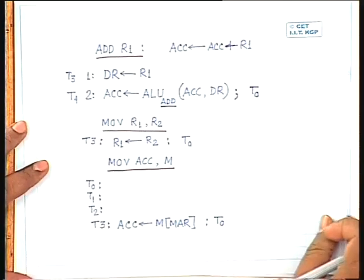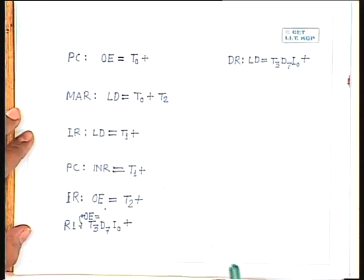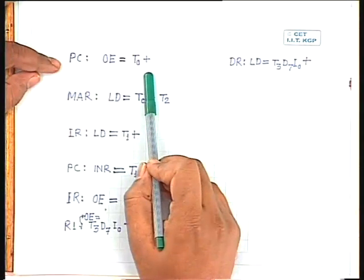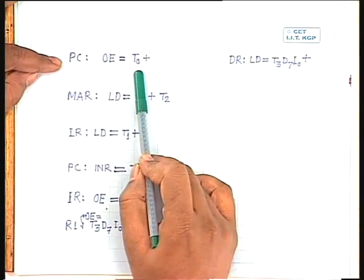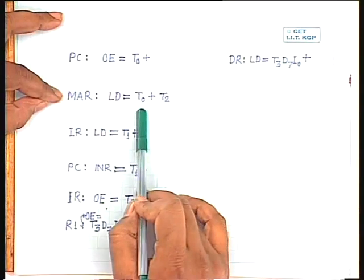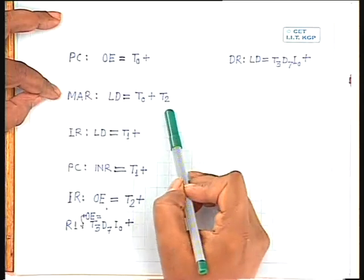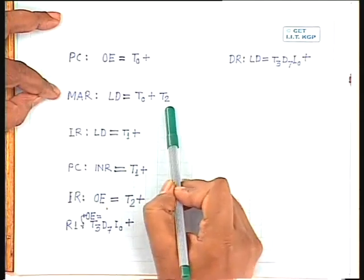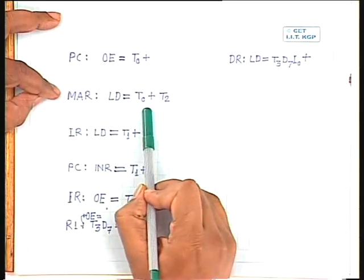We were developing the control logic for these operations. During T0, T1, and T2, operations are common for all instructions. During T0, the program counter content goes to the memory address register, so the output enable of the program counter must be activated. The memory address register load signal is active during T0 and also during T2, when the lower 12 bits of the instruction register (the operand address) are transferred to the memory address register. So the load control signal gets the logic T0 + T2.